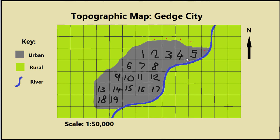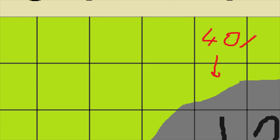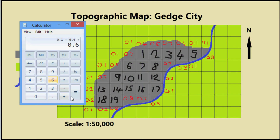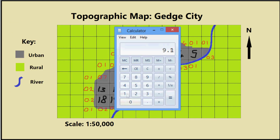Then count how many part squares there are and add them up. This square, for example, occupies an estimated 40% of the square, so I will count this as 0.4 of the square. Now add up the part squares — I've added them up to 9.1. Then add the two totals together: 19 plus 9.1 equals 28.1.